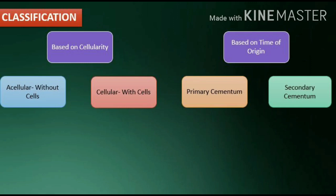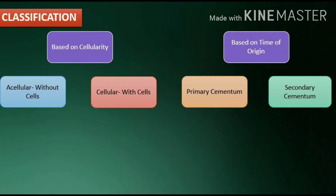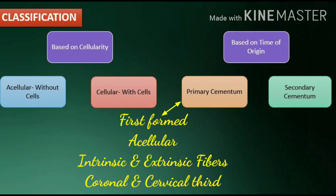Classification of Cementum: based on cellularity — acellular cementum, cementum without cells; cellular cementum, cementum with cells. Based on the time of origin — primary cementum: it is the first formed cementum and is acellular. It develops slowly as the tooth erupts, extending from the cervical portion to the coronal two-thirds of the root.